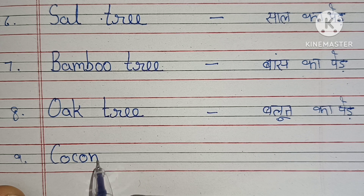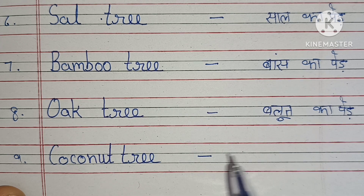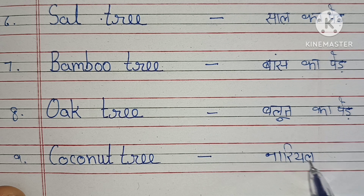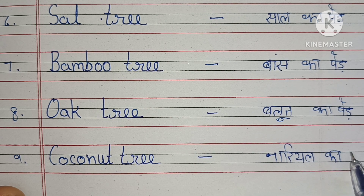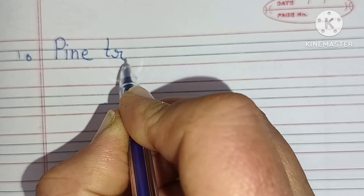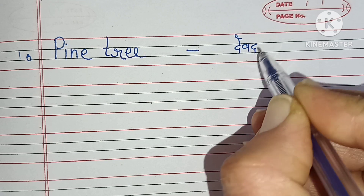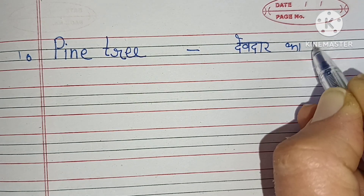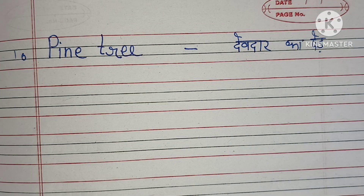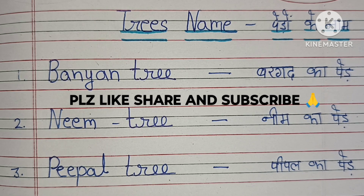Number 9: Coconut Tree. C-O-C-O-N-U-T, Coconut Tree. Coconut Tree means Naryal Ka Paid. Number 10: Pine Tree. Pine Tree means Cheed Ka Paid.